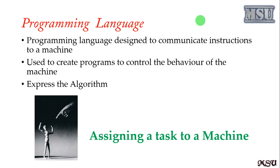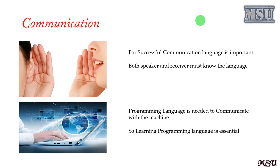Before discussing Java, we have to understand what is the essential of a programming language. We are assigning a task to a machine — that is called a program. Whether you write addition of two numbers or a calculator program, we want to perform some task and assign it to a machine. For successful communication, language is very important — both the speaker and the hearer must know the language. Programming language means we are communicating with the system. One of the important programming languages in recent times is Java, which comes under object-oriented programming. C comes under procedure-oriented or structure-oriented.